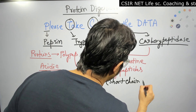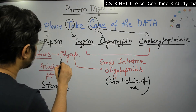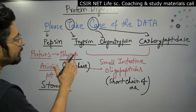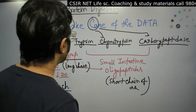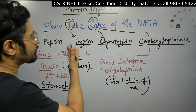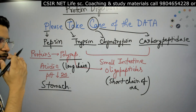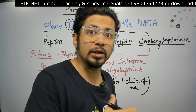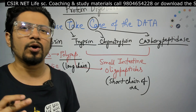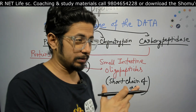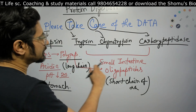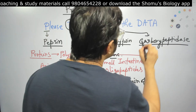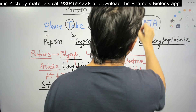Trypsin and chymotrypsin are produced by the pancreas — the organ that produces many digestive enzymes — but they act in the small intestine. So the pancreas is involved in production, but these enzymes function within the small intestine, breaking long polypeptide chains into shorter oligopeptide chains.